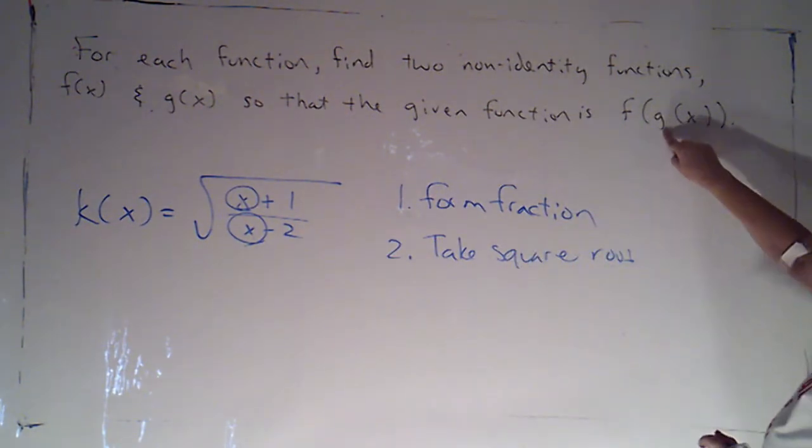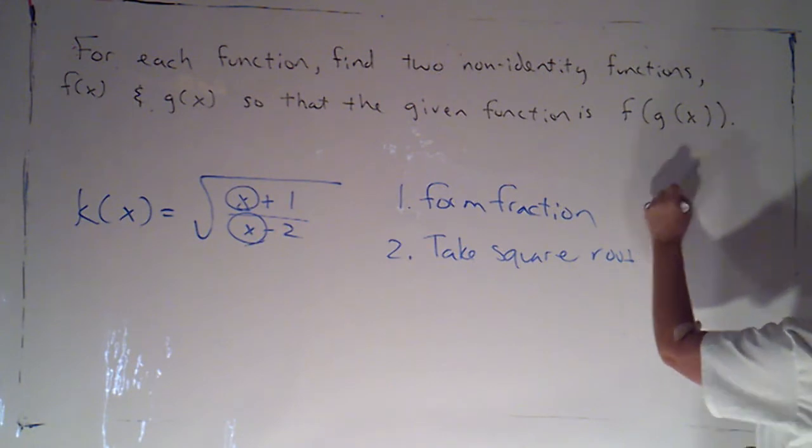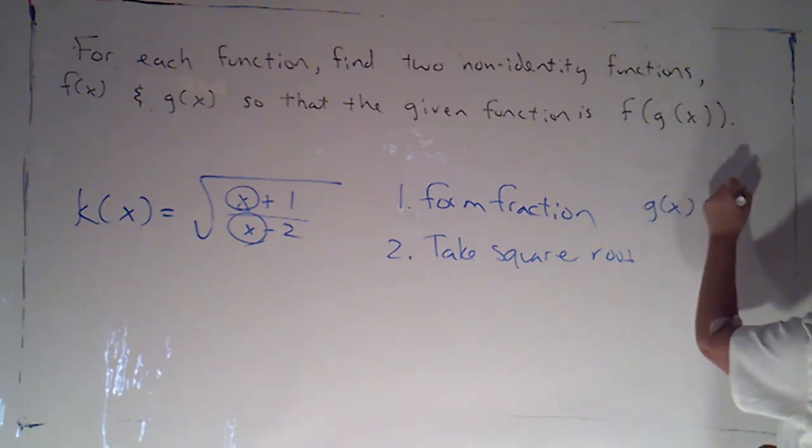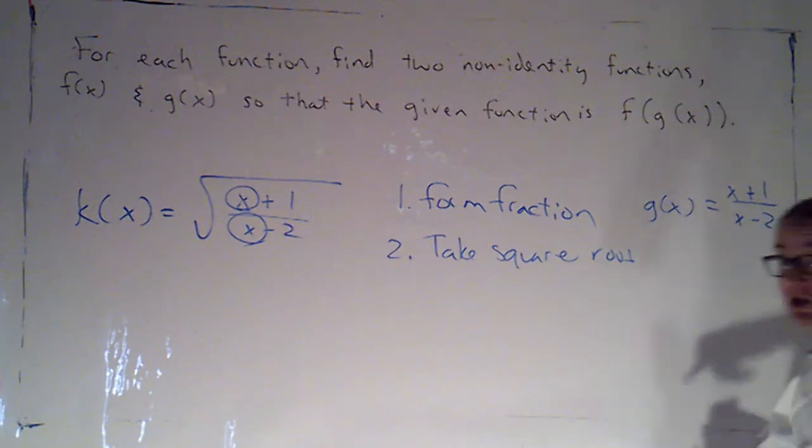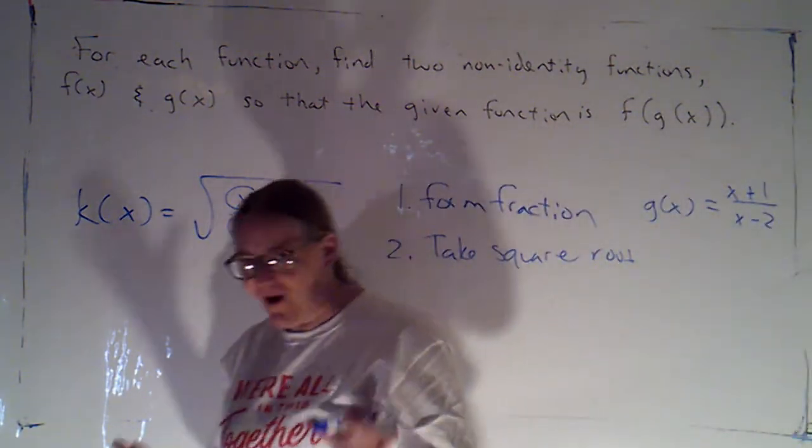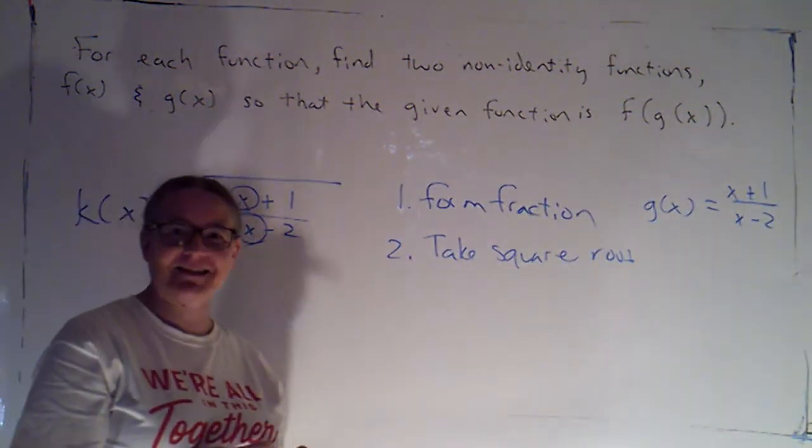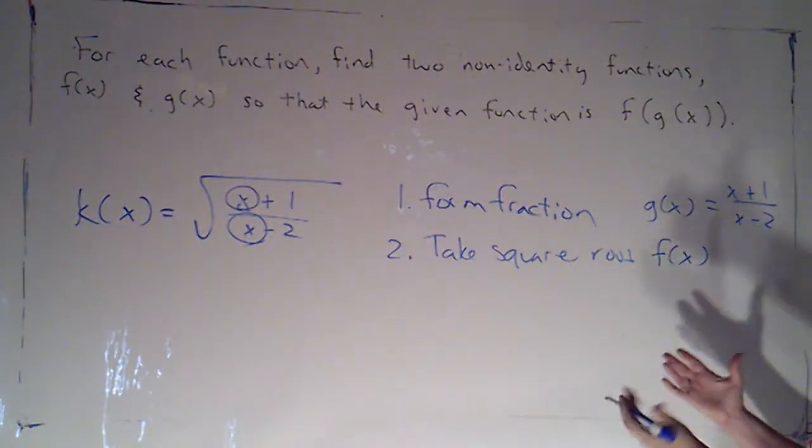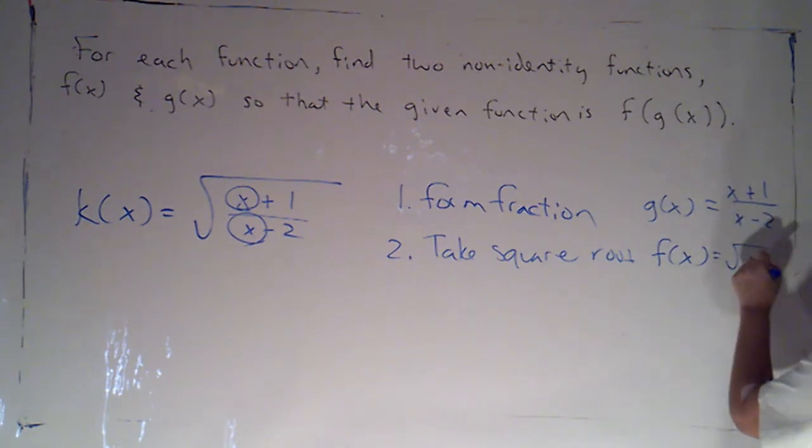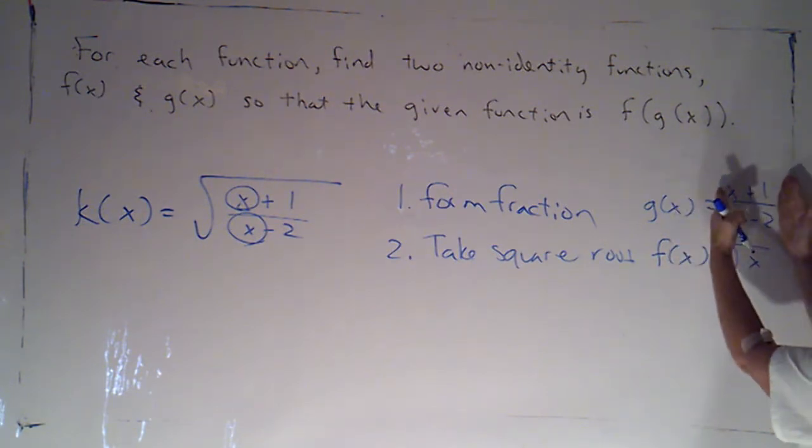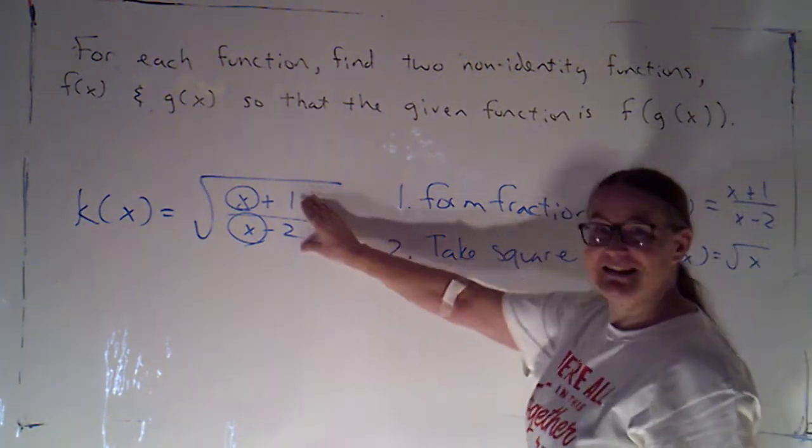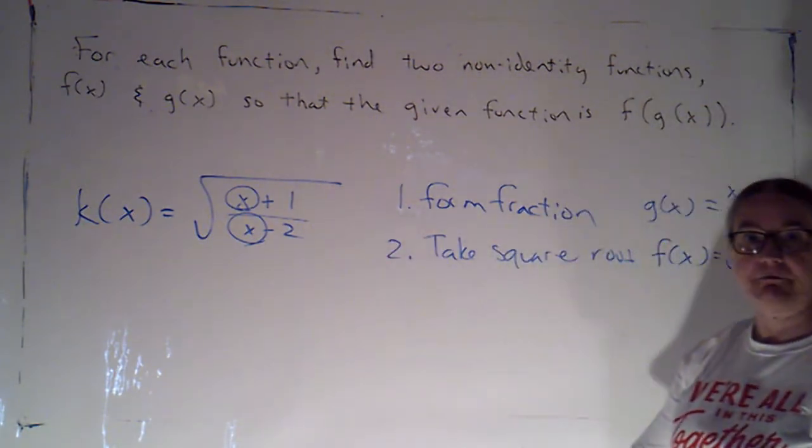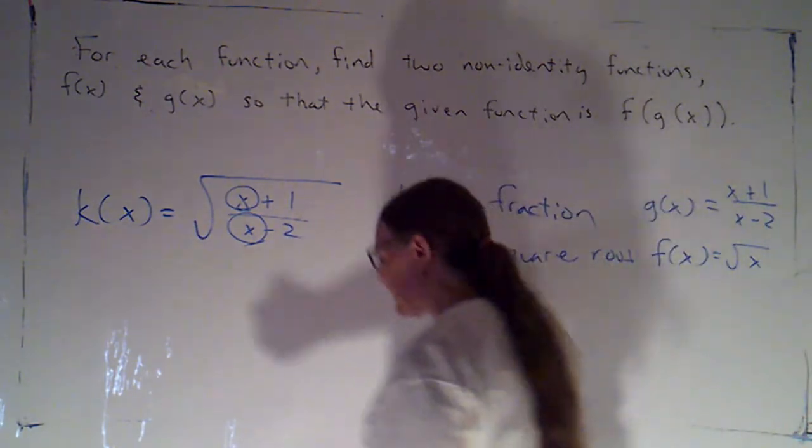With this notation, g is what we're doing first. So, g of x would just be x plus 1 over x minus 2. It's a little bit more complicated than the initial step we had the last time. And then, f of x, what do I do to that? I take the square root. Again, just using x as a placeholder for my input, once I make that input be g of x, this is what I'll be plugging in to take the square root of.